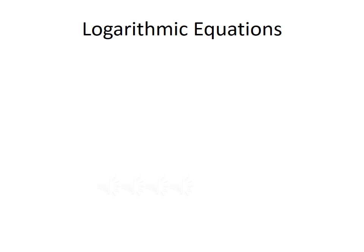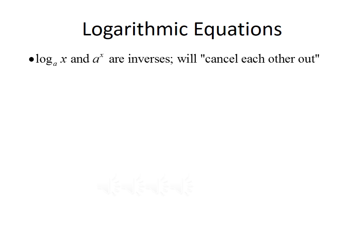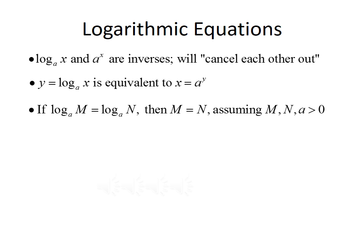Let's think about the following three items. First, log base a of x and a to the x are inverses, so we can use them to cancel each other out. Second, if we have y equals log base a of x, we can rewrite that as x equals a to the y. And third, if we have log base a of m equal to log base a of n — the same logarithm on both sides — we can cancel the logarithms and set what's inside equal to each other, so m equals n. This assumes that m, n, and a are all greater than zero. These three properties can be used to help solve logarithmic equations.